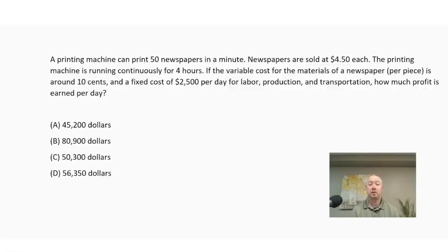A printing machine can print 50 newspapers in a minute. Newspapers are sold at $4.50 each. The printing machine is running continuously for four hours. If the variable cost for the materials of a newspaper per piece is around 10 cents and a fixed cost of $2,500 per day for labor, production and transportation, how much profit is earned per day? So the first thing I want to do is set up a variable that represents newspapers. So I'm going to say X represents the number of newspapers I sell a day.